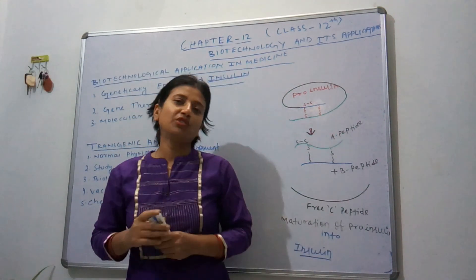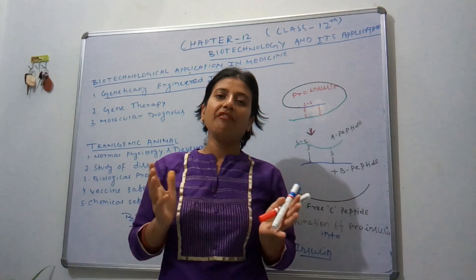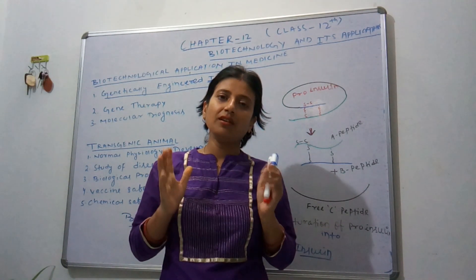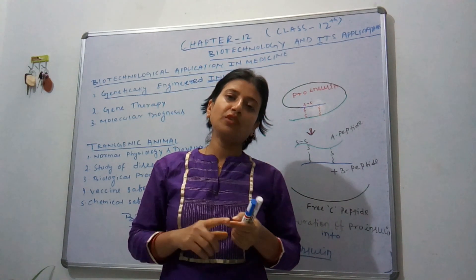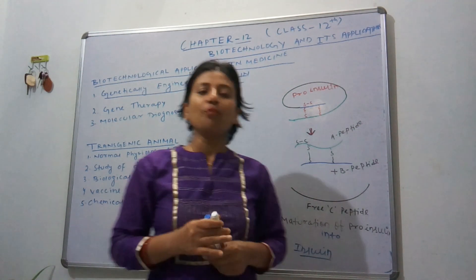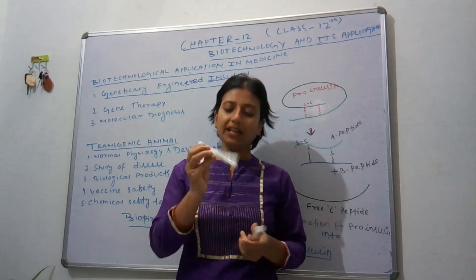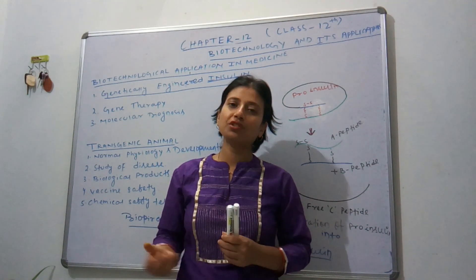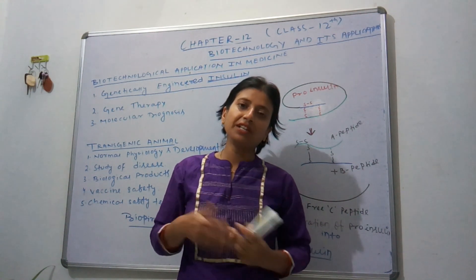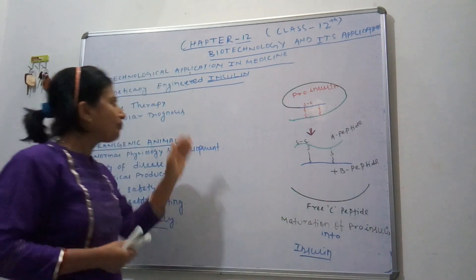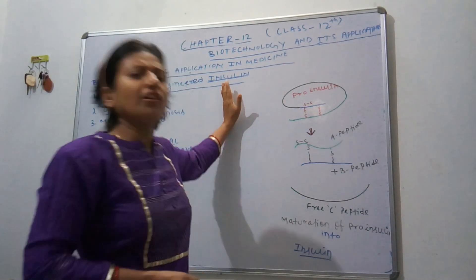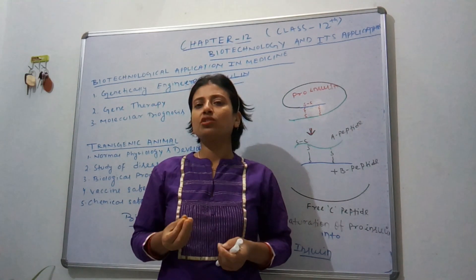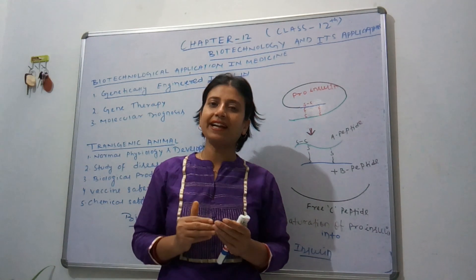A question arises in your mind: what is insulin, what is its importance, where does it come from? As we know, the pancreas is the dual gland present in all mammals which secretes insulin. Insulin helps in maintaining the sugar level in our blood. If a person is unable to secrete enough insulin, they have to introduce extra insulin from outside to control the sugar level. Long ago, persons who lacked insulin used insulin from other animals such as slaughtered cattle and pigs.